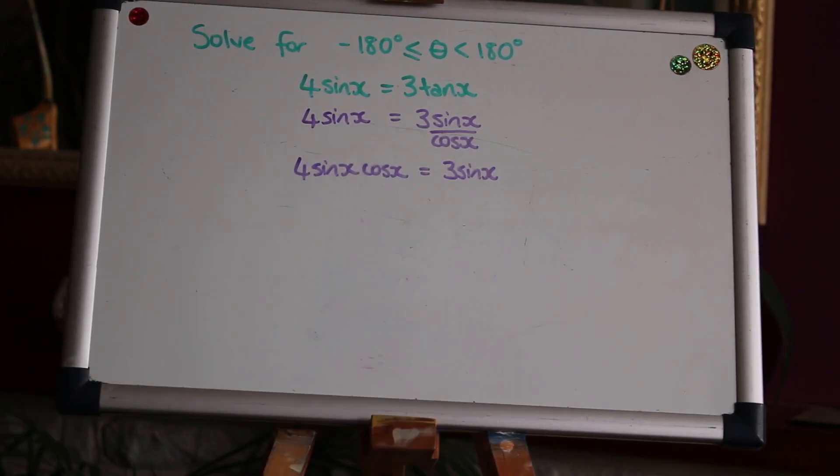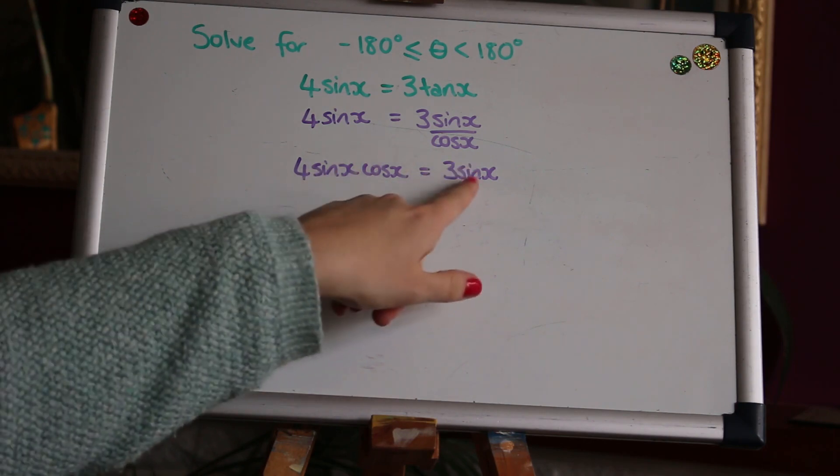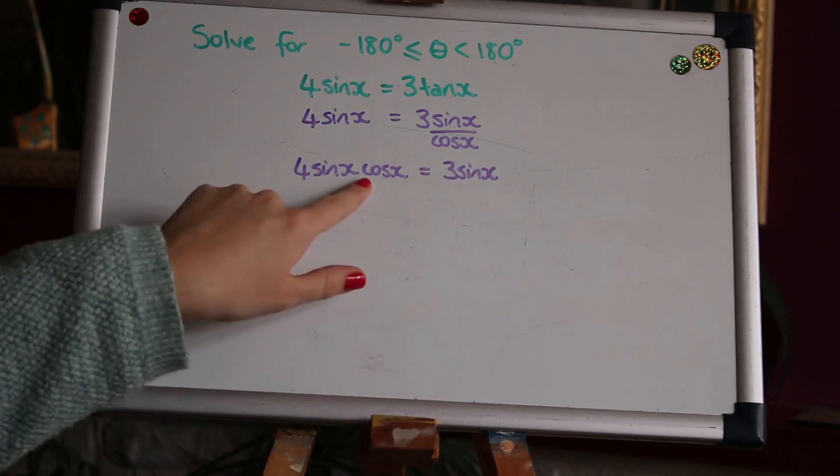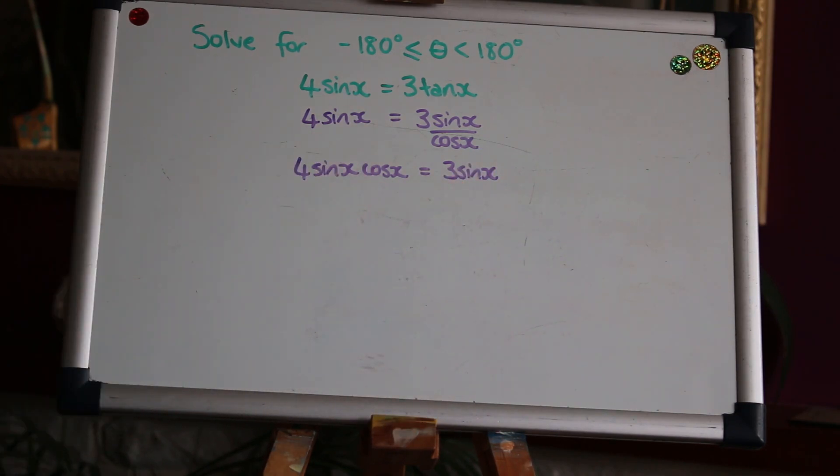By timesing the cos up to the left hand side, we've now got rid of the fraction which is always a good thing to do. And another trick you can use to solve an equation that looks like this is noticing that the sign appears in both of the terms. So if we take this term over to that side, then we can factorise and solve that way.